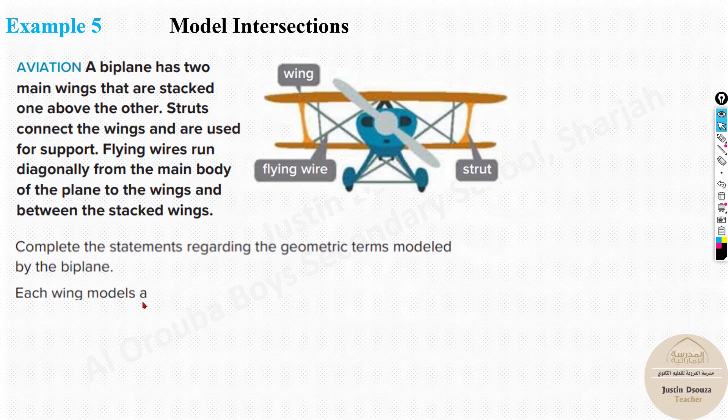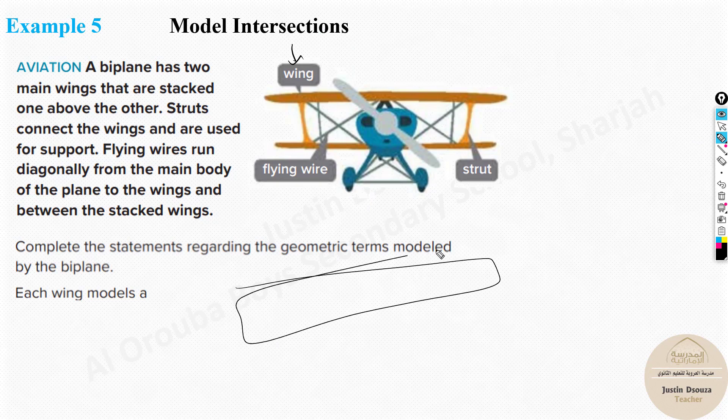Now we need to complete the statements regarding the biplane. They have told some statements. Each wing models what? Each wing, wing is something like this. It'll be, you know, if you see from top view, you can see it's something like this. It's a plane basically. They each model a plane. Now what is the next one? The intersection of strut and a wing.